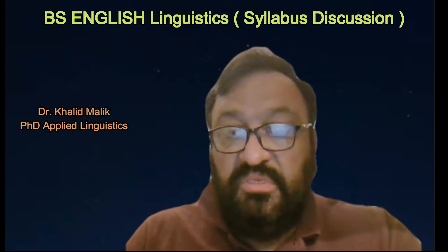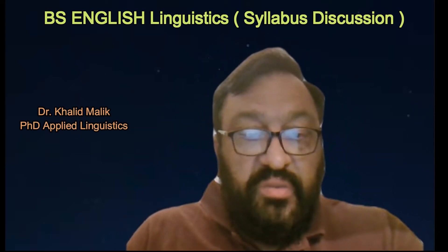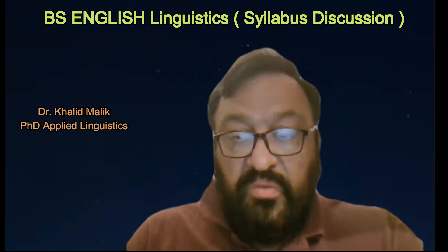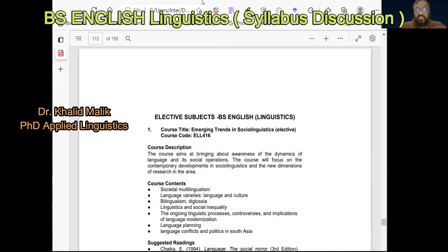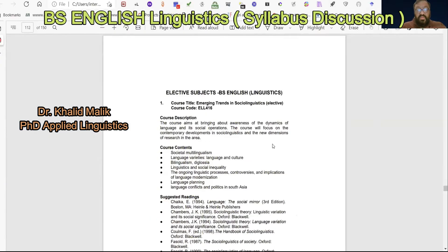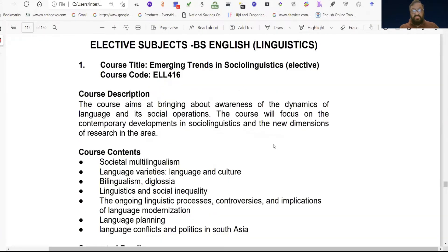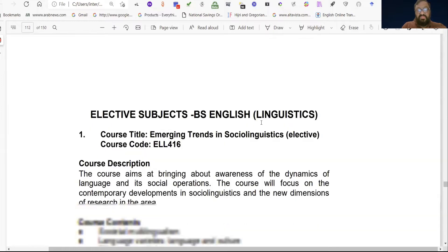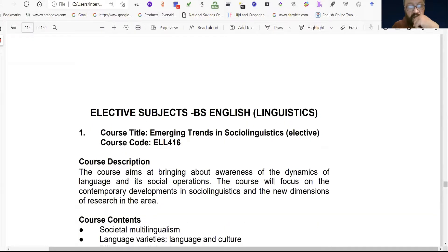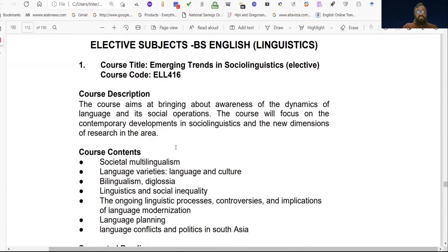We have to see how many subjects there are. I think you can now see the whole screen. This is the BS English Program — effective subjects, elective subjects, BS English Linguistics. The course title is Emerging Trends in Social Linguistics, which is the first paper.